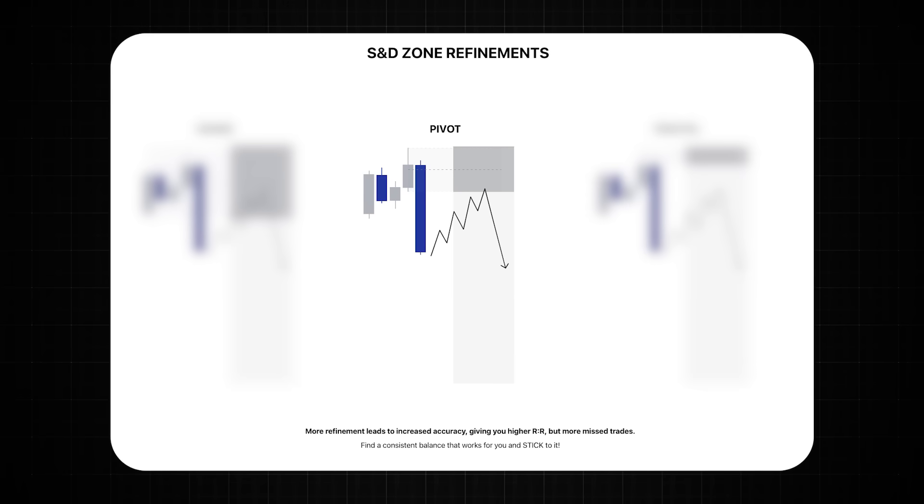I recommend that you start with always looking to take the single candle pivot as this gives the best balance between risk to reward and also getting entered into enough positions. Now remember that the market is made up of all of those orders transacting with each other but we make sense of that complicated order flow with our candlestick charts.